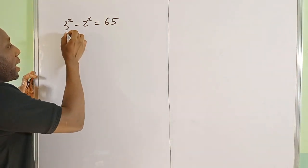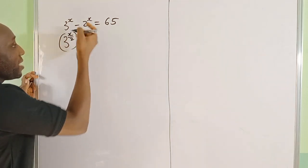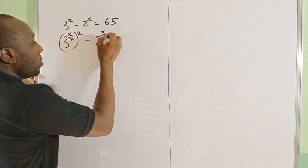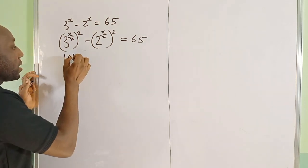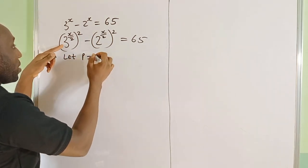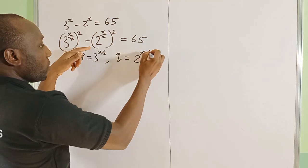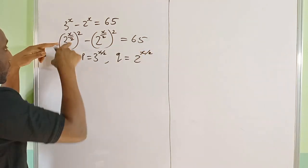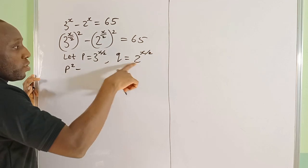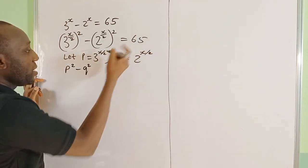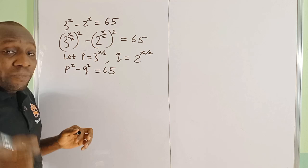So it's going to be 3 raised by x/2, squared, minus 2 raised by x/2, squared, equals 65. Now I can say let p equal 3 raised by x/2, and let q equal 2 raised by x/2. So that gives us p squared minus q squared equals 65.